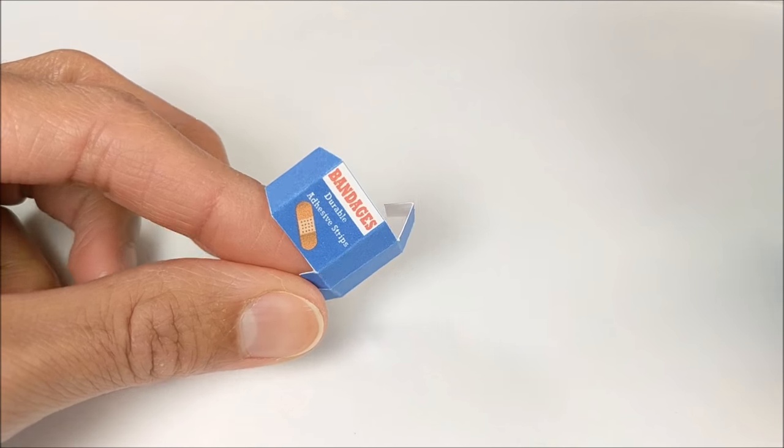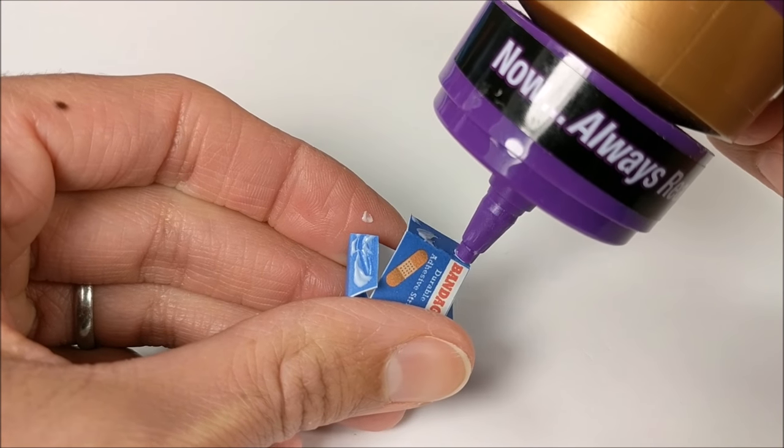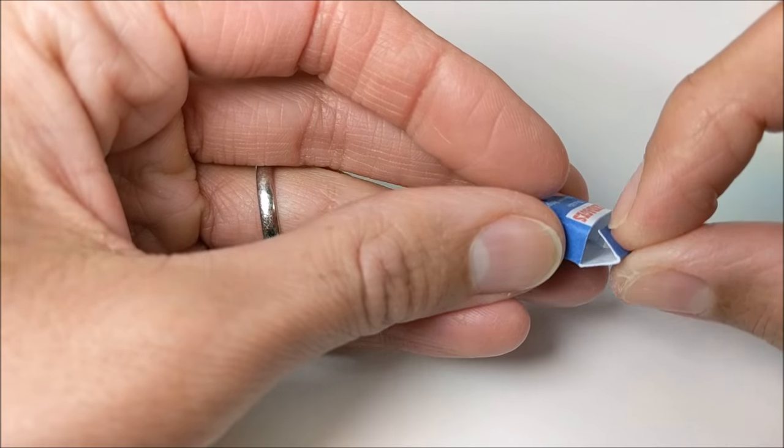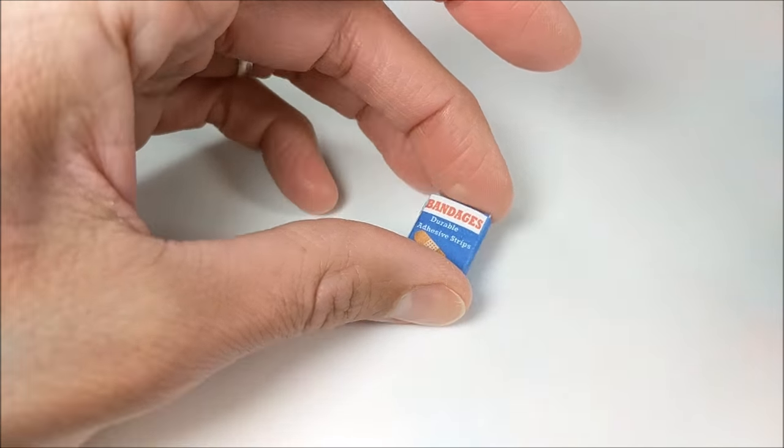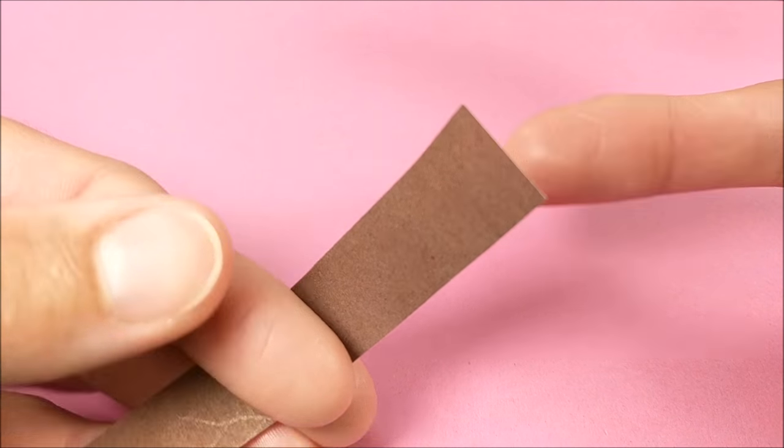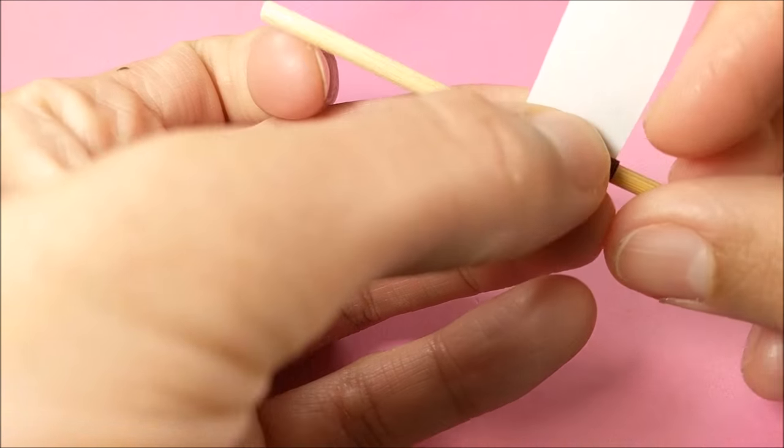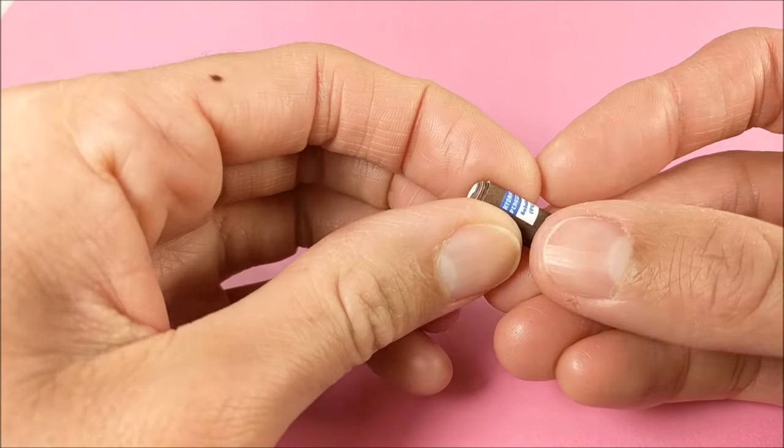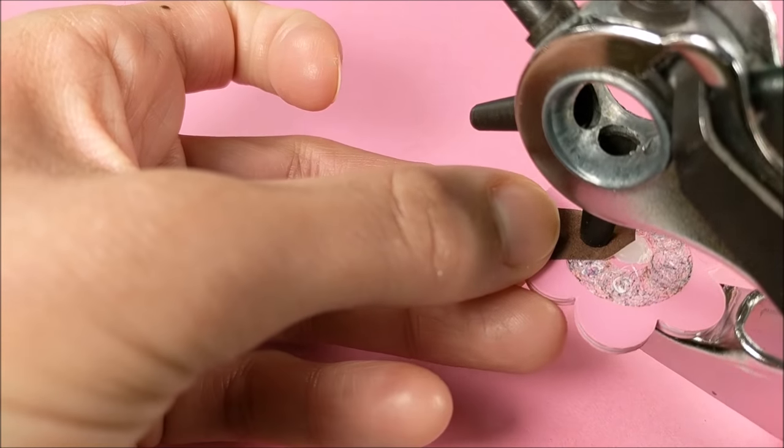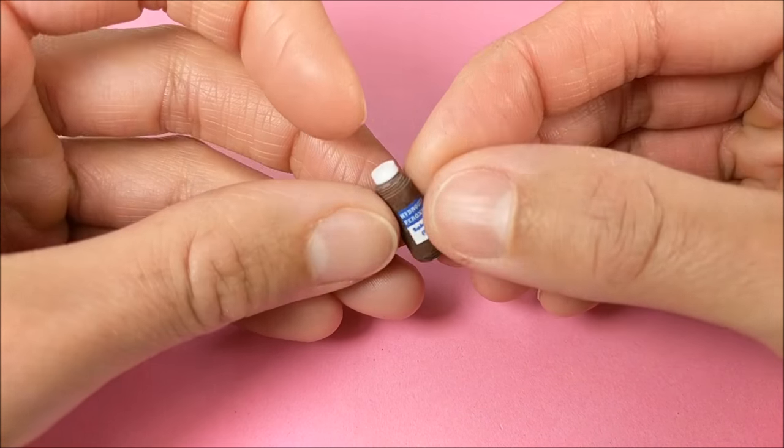Then I apply glue to the bottom and side tab on my band-aid package. For my hydrogen peroxide bottle, I take my brown strip, cutting off a little bit of the ends to use later. I wrap the wider section around a dowel—as I wrap it, the top becomes more narrow. Then I cut out white craft foam paper and the remaining brown paper, gluing the white craft foam to the top and brown to the bottom. I do the same with my pill bottle, using blue craft foam paper painted with nail polish for the top.